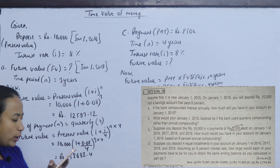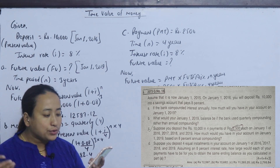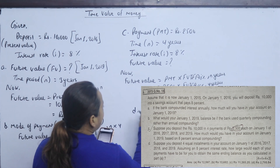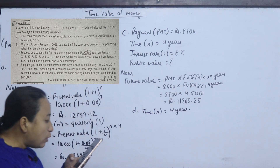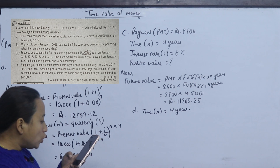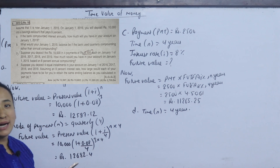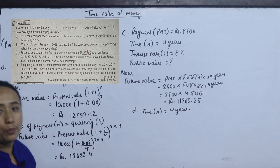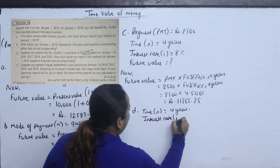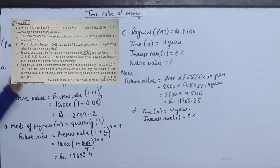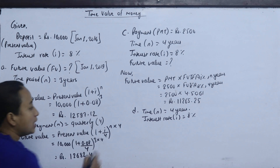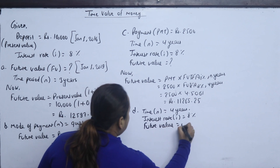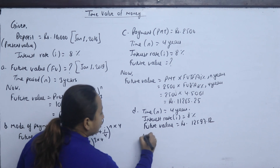If you deposit 4 equal amounts into your account on January 1, 2016, 2017, 2018, and 2019, how large would each payment have to be to obtain the same ending balance as calculated in Part A? The interest rate is 8%. Future value from Part A is 12,597.12.